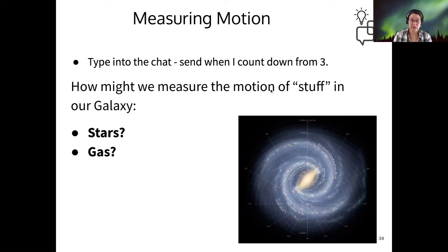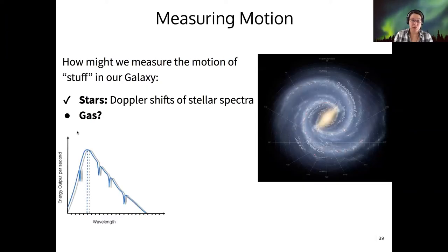All right, lots of good ideas out there. So the one that I had in mind was Doppler shift for stars in particular. So last time we talked about the black body spectra of stars and how the Doppler shift causes the entire spectrum to move either to the red if the star is moving away from us or to the blue if the star is moving toward us. So we can do that if we take the spectrum of different stars and then look for the Doppler shift, then we can figure out which direction that star is moving with respect to us and how fast.